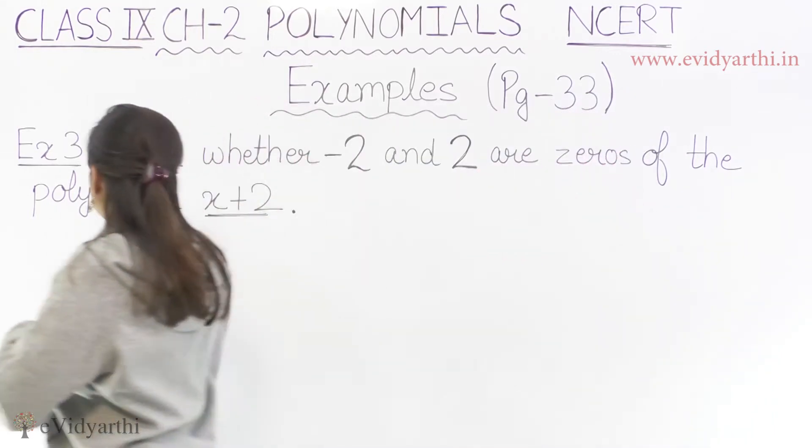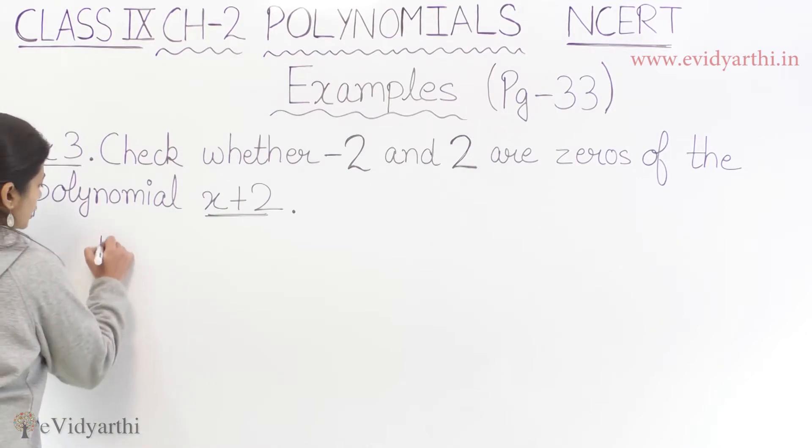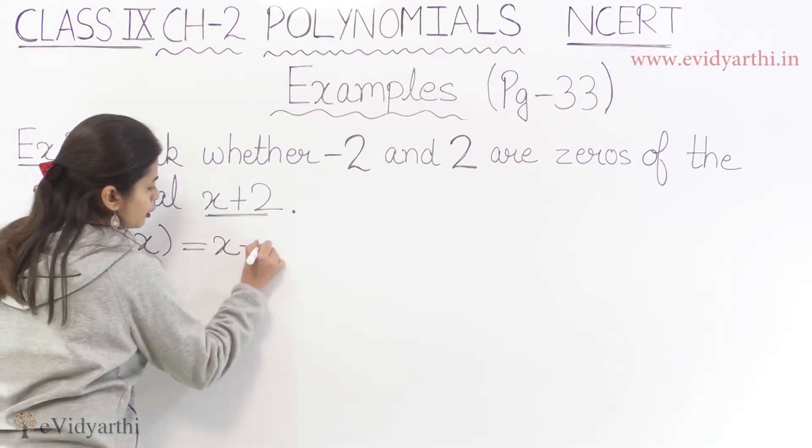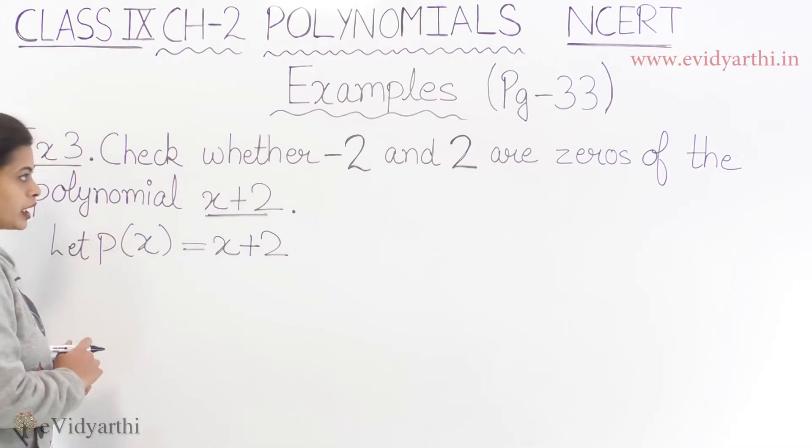So how do we check? First of all, let's label our polynomial. So let's denote our polynomial. We have a polynomial, we have to denote it.